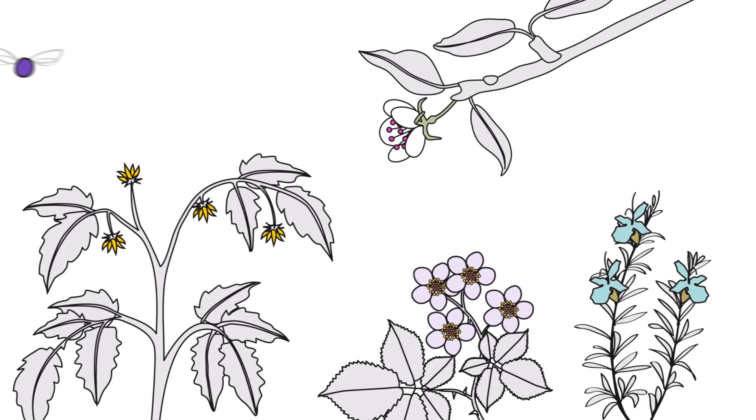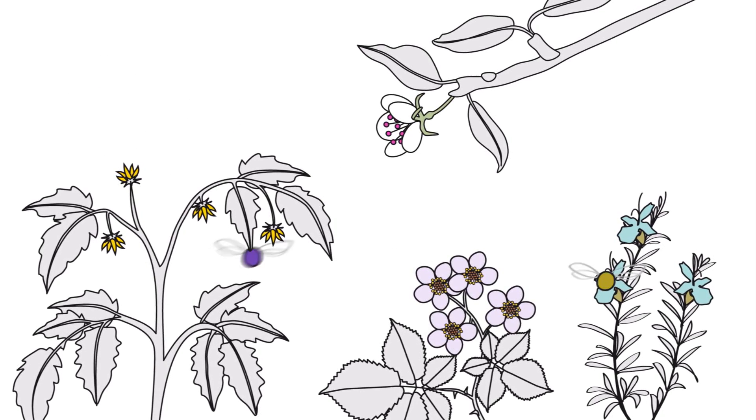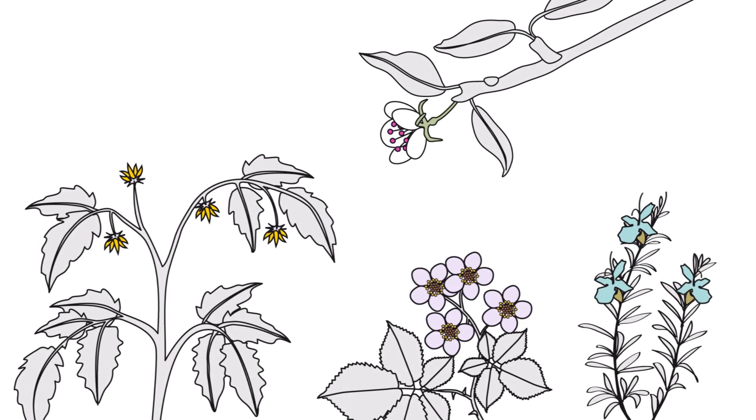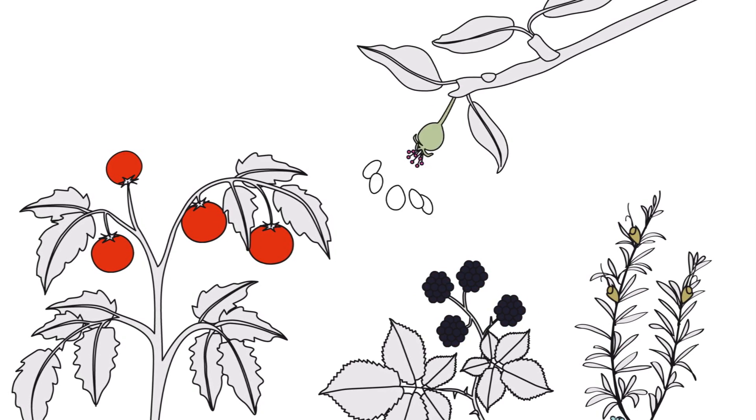For example, some bee species are awesome at pollinating tomatoes, while others are good with rosemary, pears, or blackberries. All together, they allow plants to reproduce, including most of the crops that feed us.